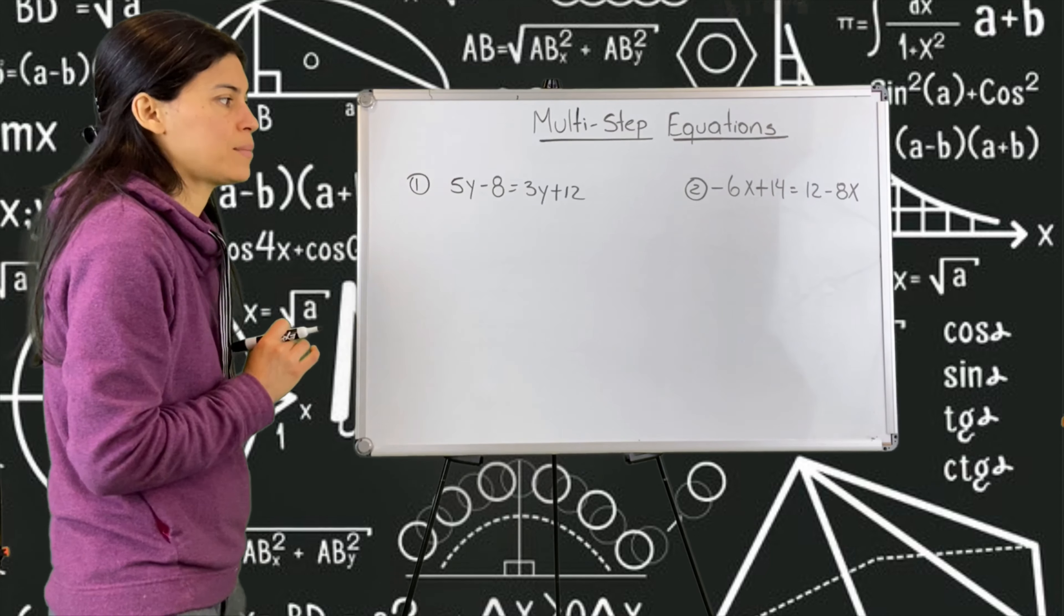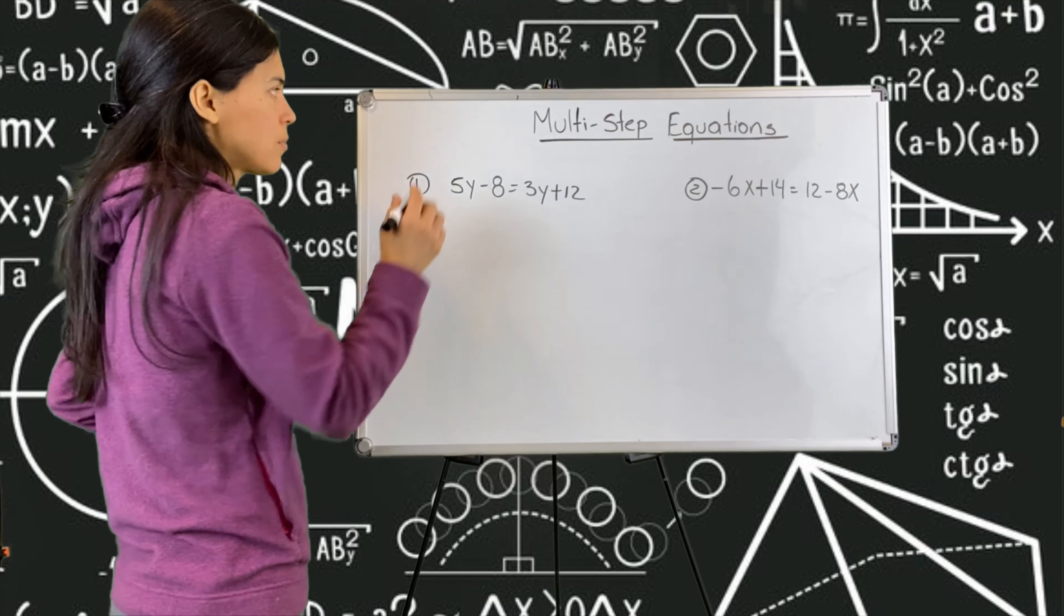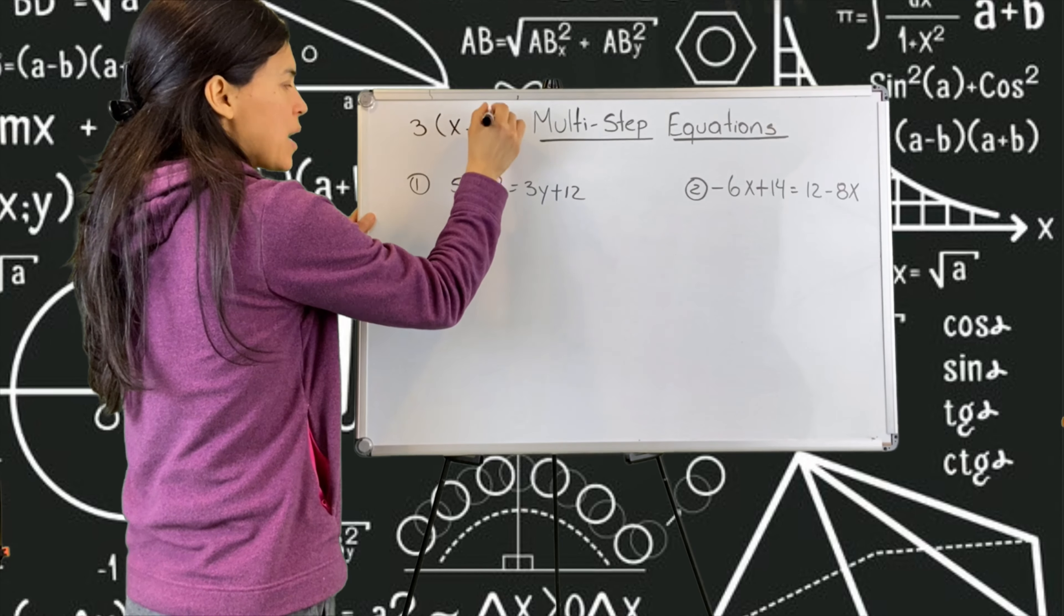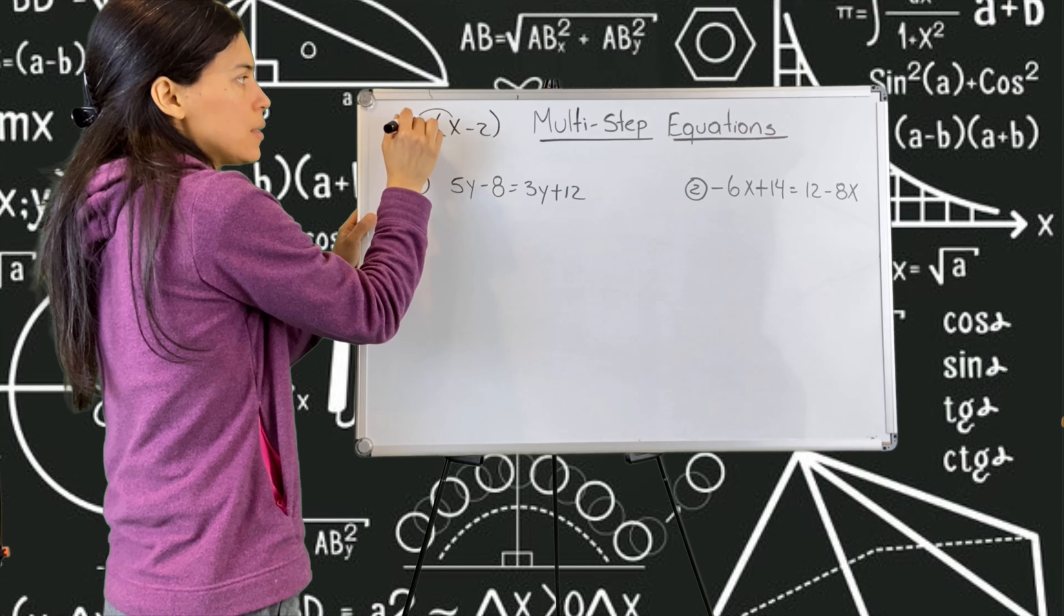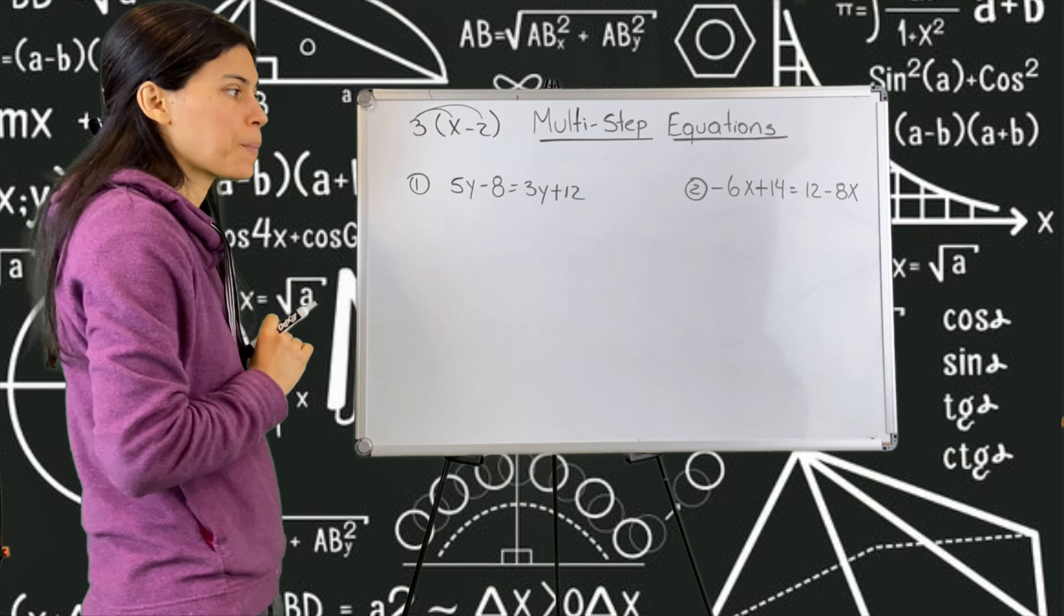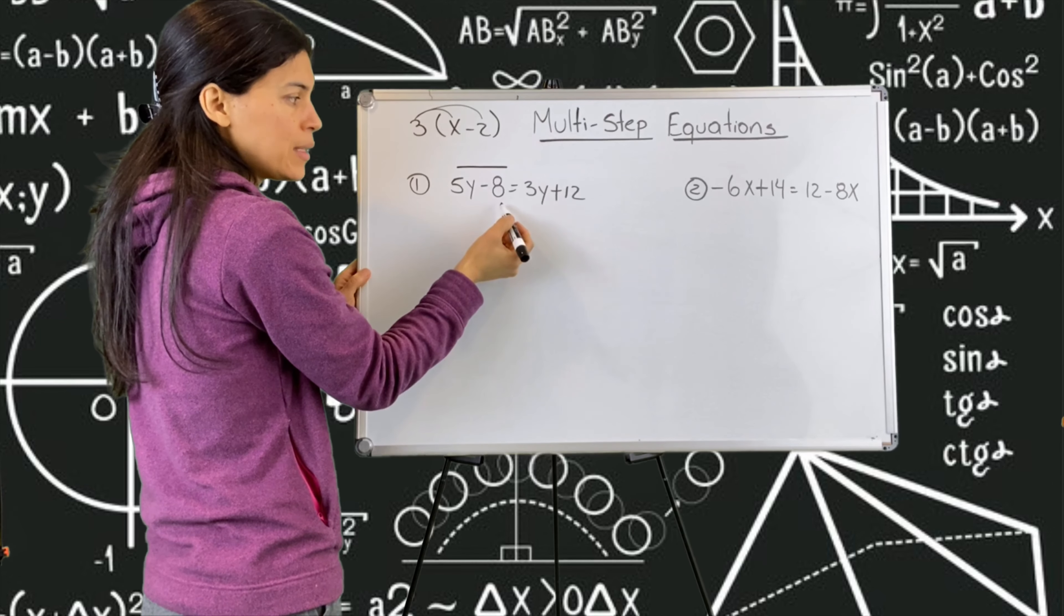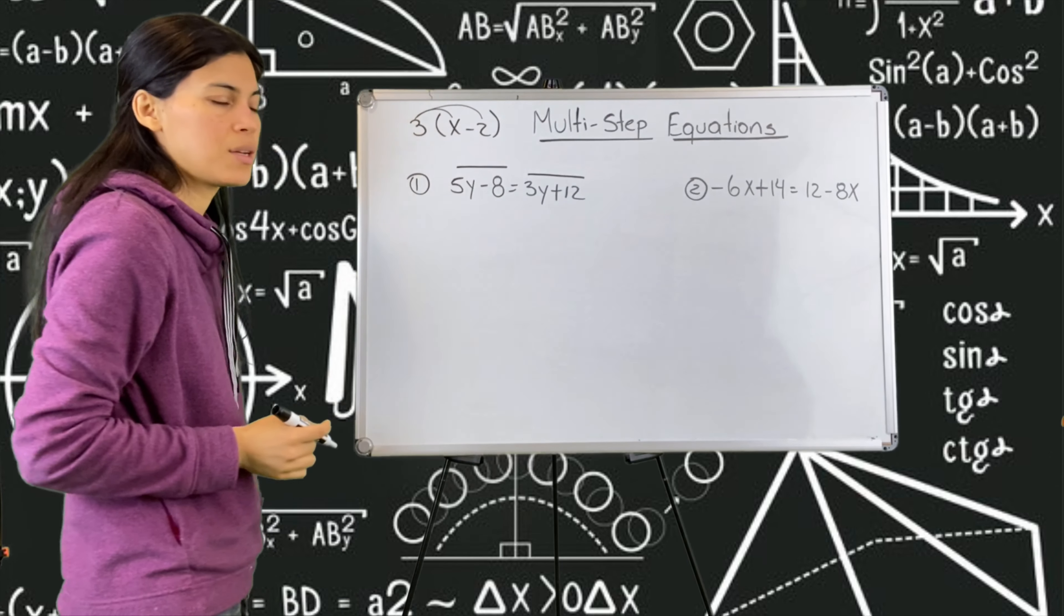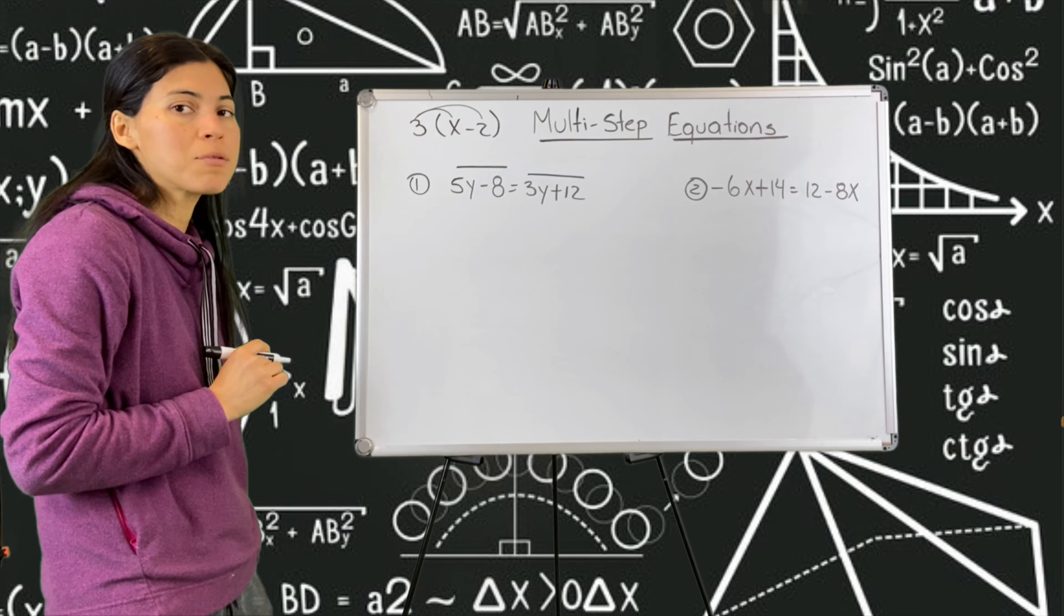Problem number one. How we solve these multi-step equations? Step one, distribute. I don't have distribution. Remember that distribution is when we have a parenthesis and a number and we need to multiply by the first term and the outside by the second term. No distribution. Number two, combine like terms. Over here, I cannot combine any other y's or numbers. And this other side of the equal, I cannot combine. So we can move to step number three, which is move variables to one side.